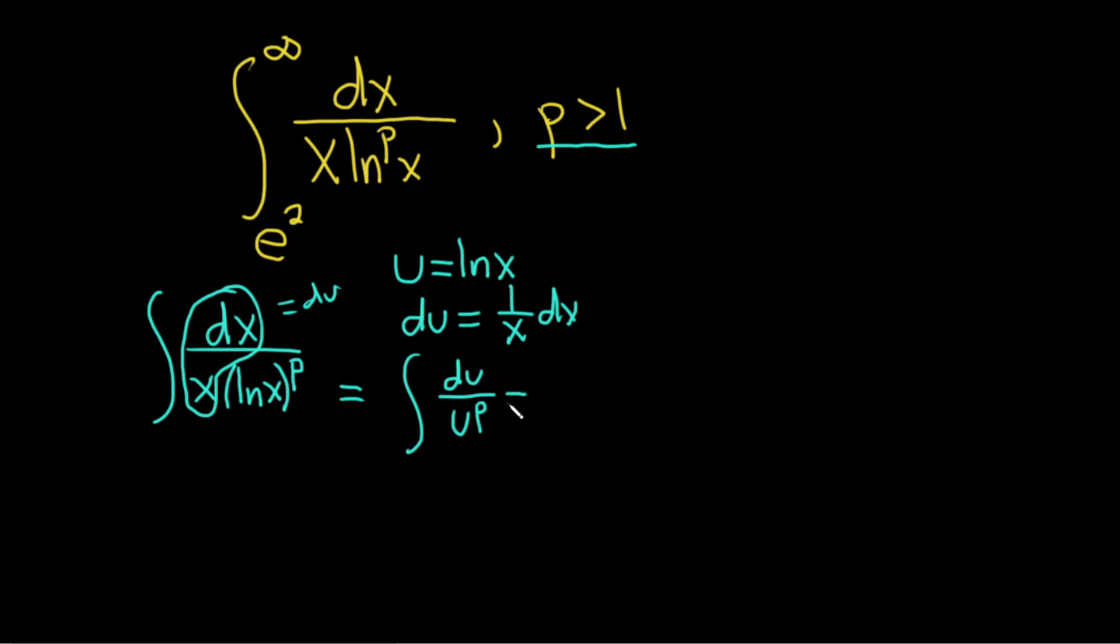Now to do this, we'll write this as u to a power. So we'll bring the u upstairs. So this becomes u to the negative p du. And we can use the power rule as long as p is not equal to 1. In this case, p is greater than 1, so we're allowed to use the power rule.